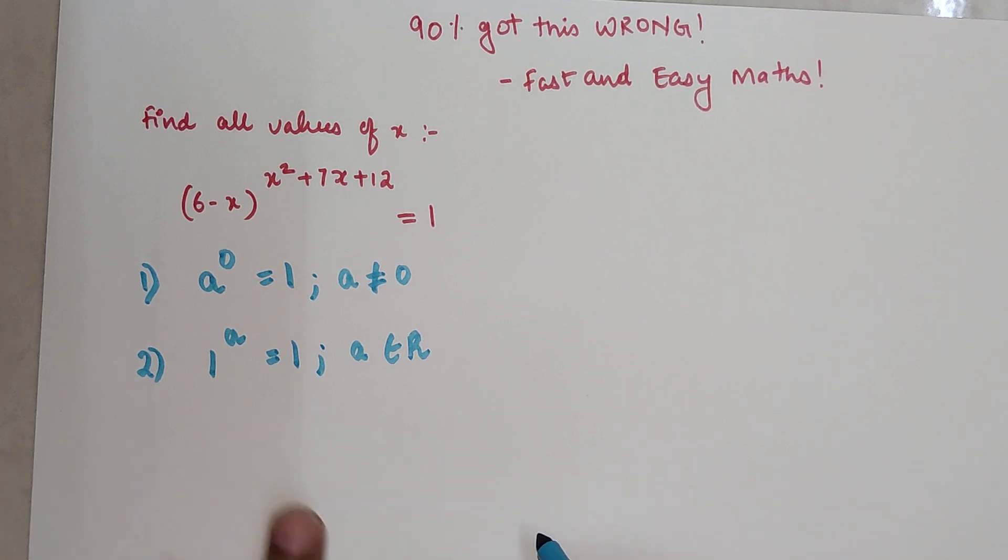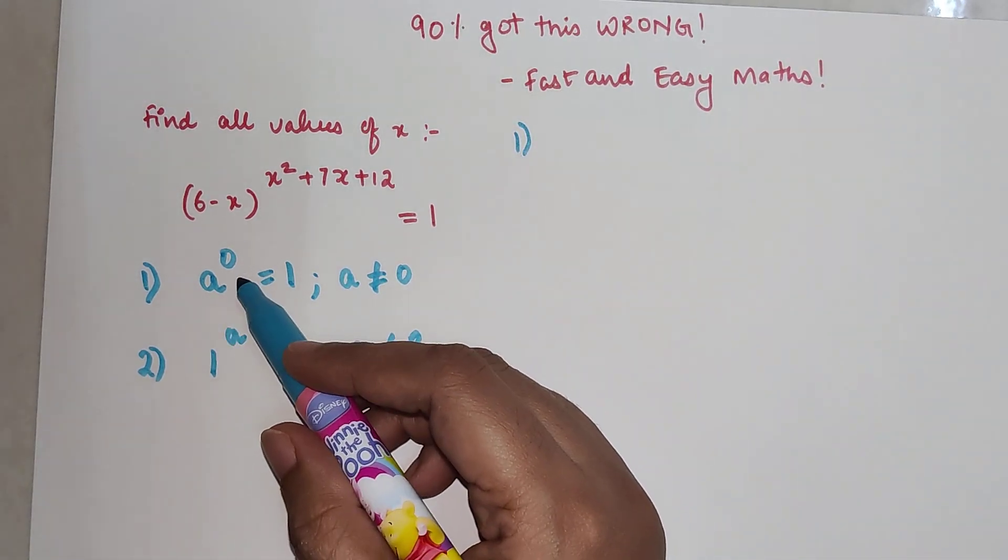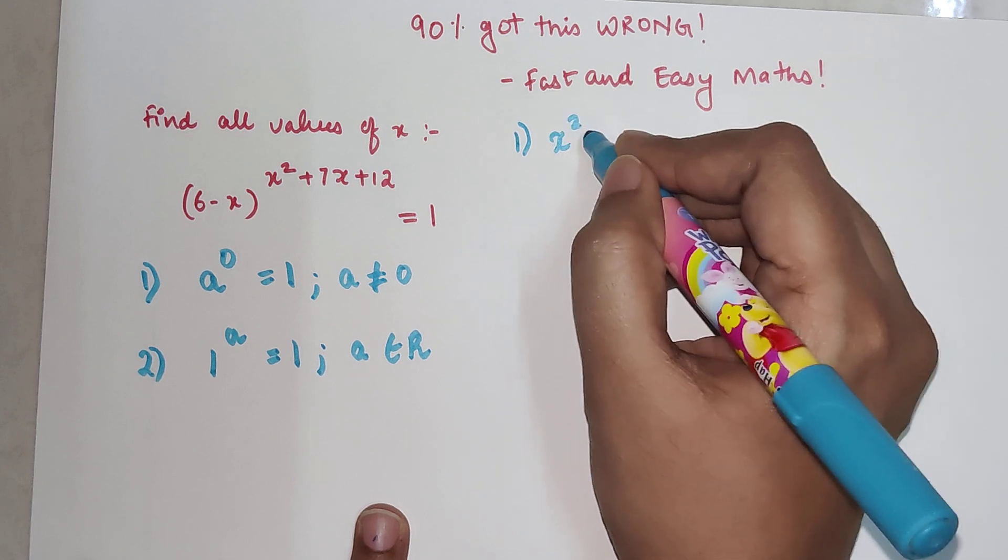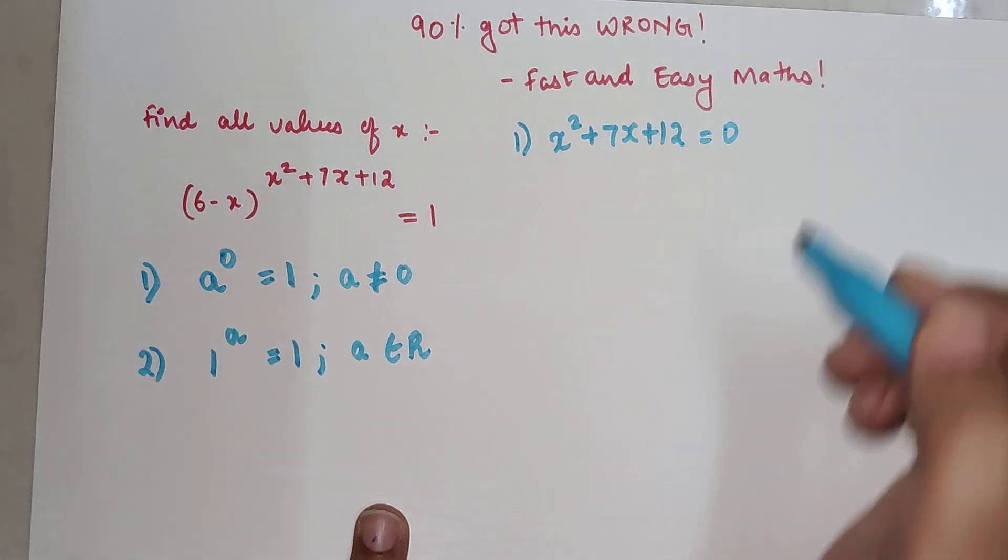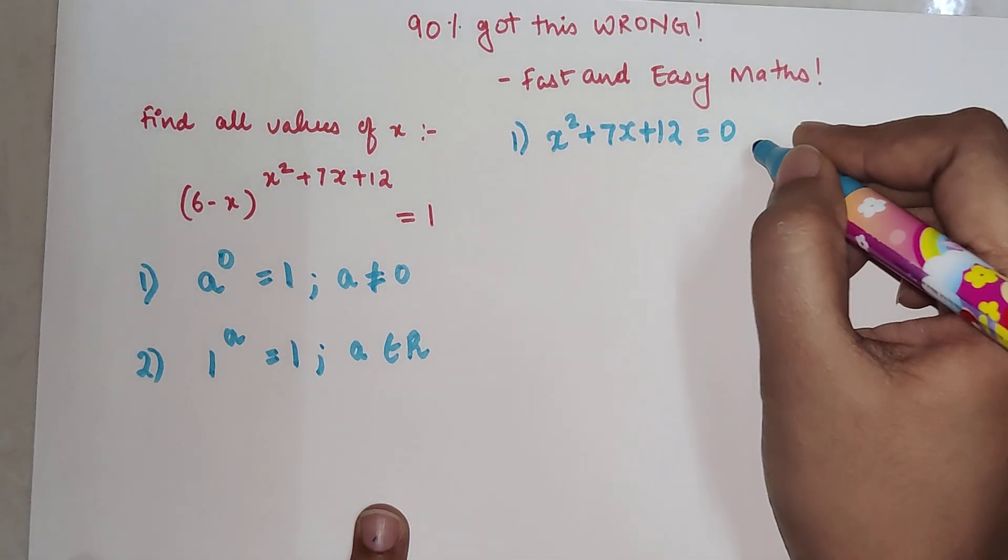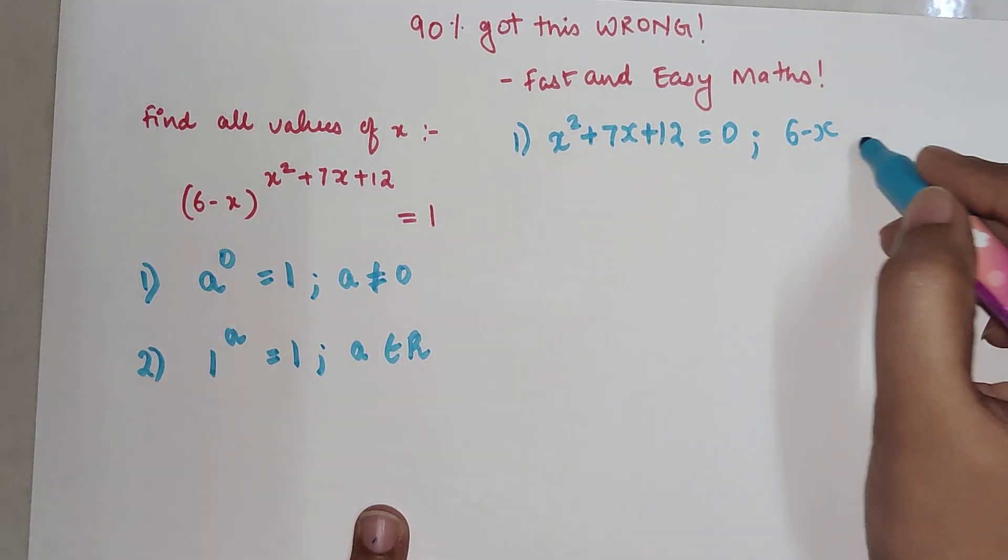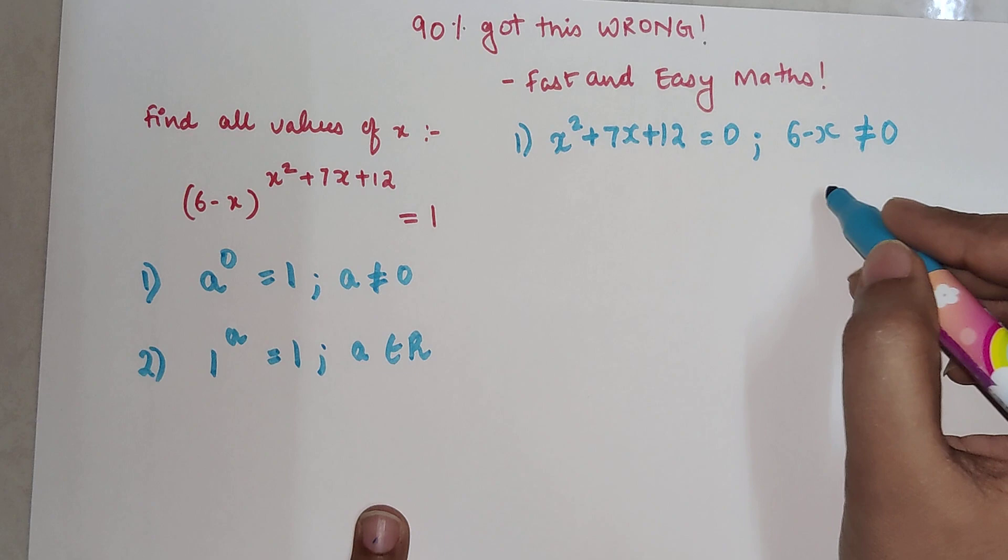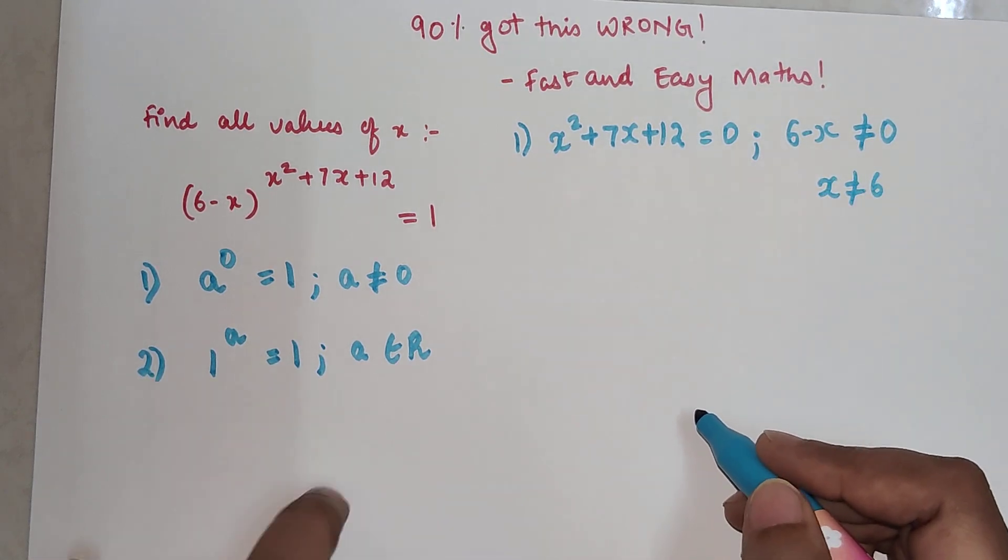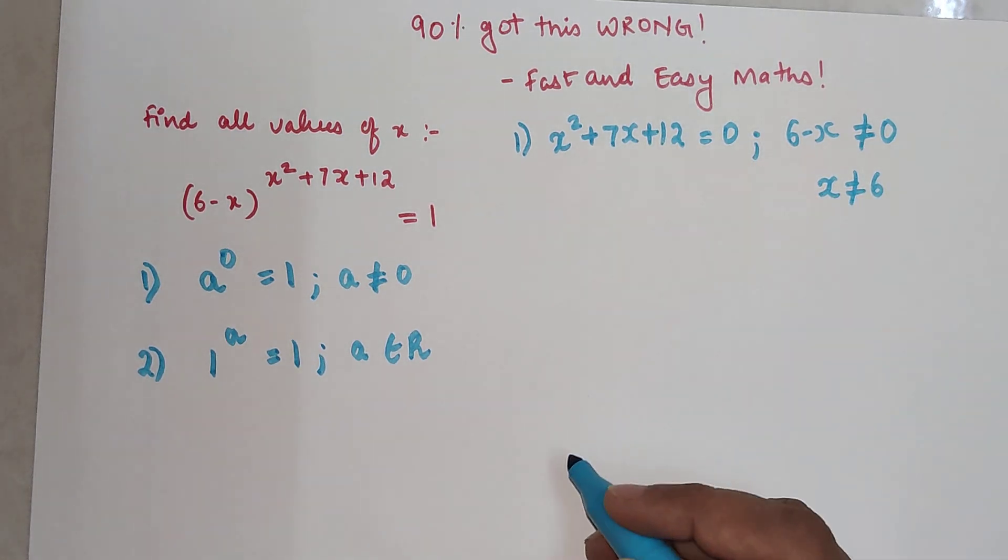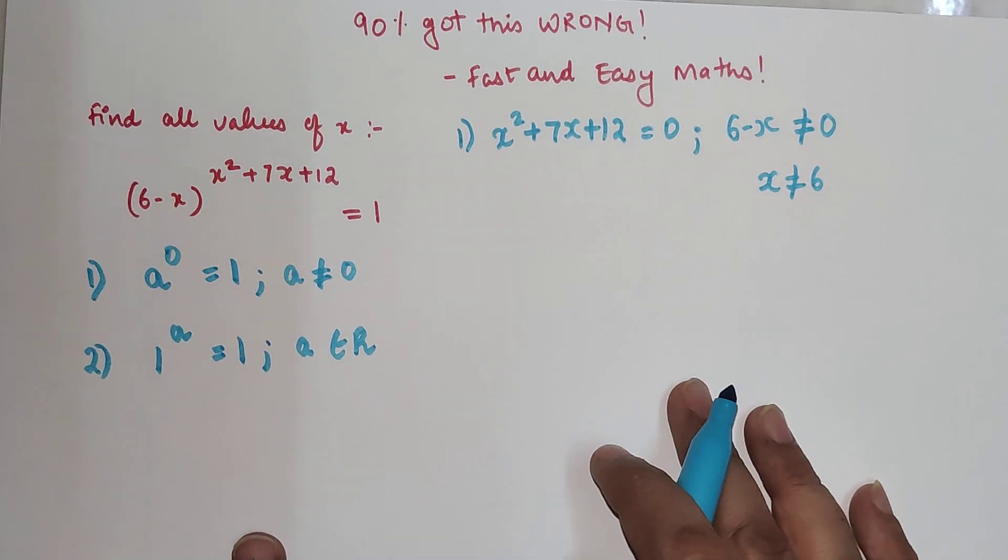Let's first start solving for case number one. Case number one is a raised to zero, means basically the index x² + 7x + 12 is equal to zero. And we have to make sure that 6 - x, because the base, cannot be equal to zero. So here we can say that x cannot equal 6. So let's start solving and see if we're getting x value as 6.